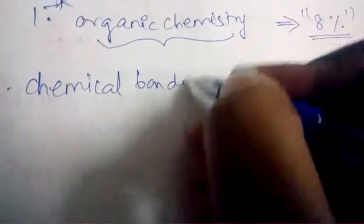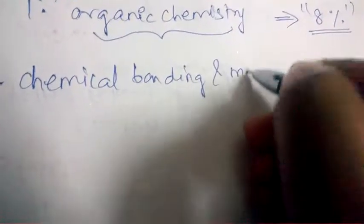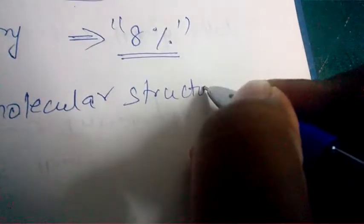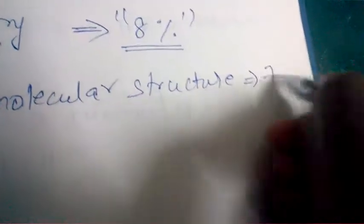Next important chapter is chemical bonding and molecular structure. From this particular chapter, 7% of questions will be asked in the question paper.